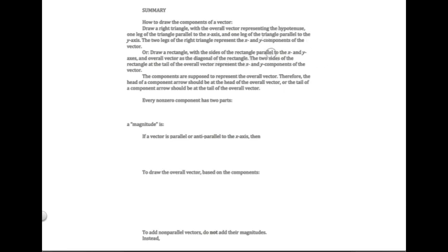These two approaches by themselves wouldn't tell you what the directions of the components are — you have to put arrows on the components. The basic rule is: the head of each component arrow should overlap with the head of the overall vector, or the tail of a component arrow should overlap with the tail of the overall vector.